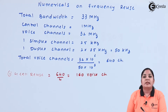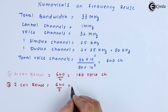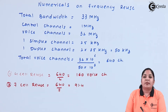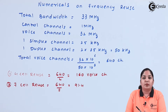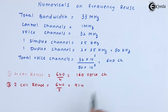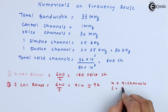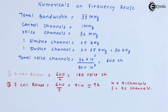Similarly, we will see for 7 cell reuse and 12 cell reuse. For 7 cell reuse, we divide the total number of channels equally into 7, but the answer is 91.4. Since channels cannot be a decimal number, for some cells we give more channels and for some cells we give less. The distribution is: for 4 cells we give 91 channels and for the next 3 cells we give 92 channels, which together form 640 channels.